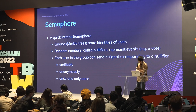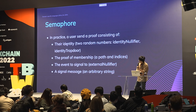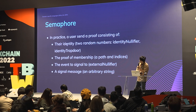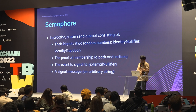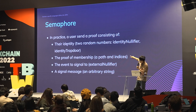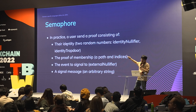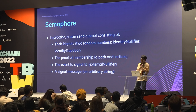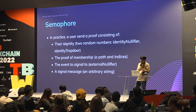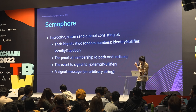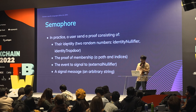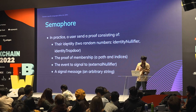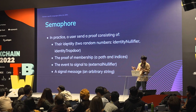To satisfy these conditions, a user sends a proof consisting of their identity — two numbers — a proof of Merkle tree membership, the event they want to signal (a random number representing the event, called an external nullifier), and the signal message itself as a string.